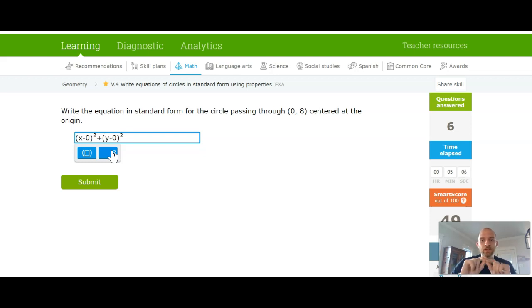So we're centered at the origin and it passes through 0, 8. So that means it goes from 0, 0 all the way up to 0, 8. So the radius there would be 8. 8 squared is 64.